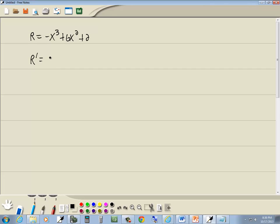So our first derivative, r prime, take your power, put it out in front, lower it by 1, so negative 3x squared, plus 6 times, take your power, put it out in front, lower it by 1, and 2 drops away. So that gives us negative 3x squared plus 12x.